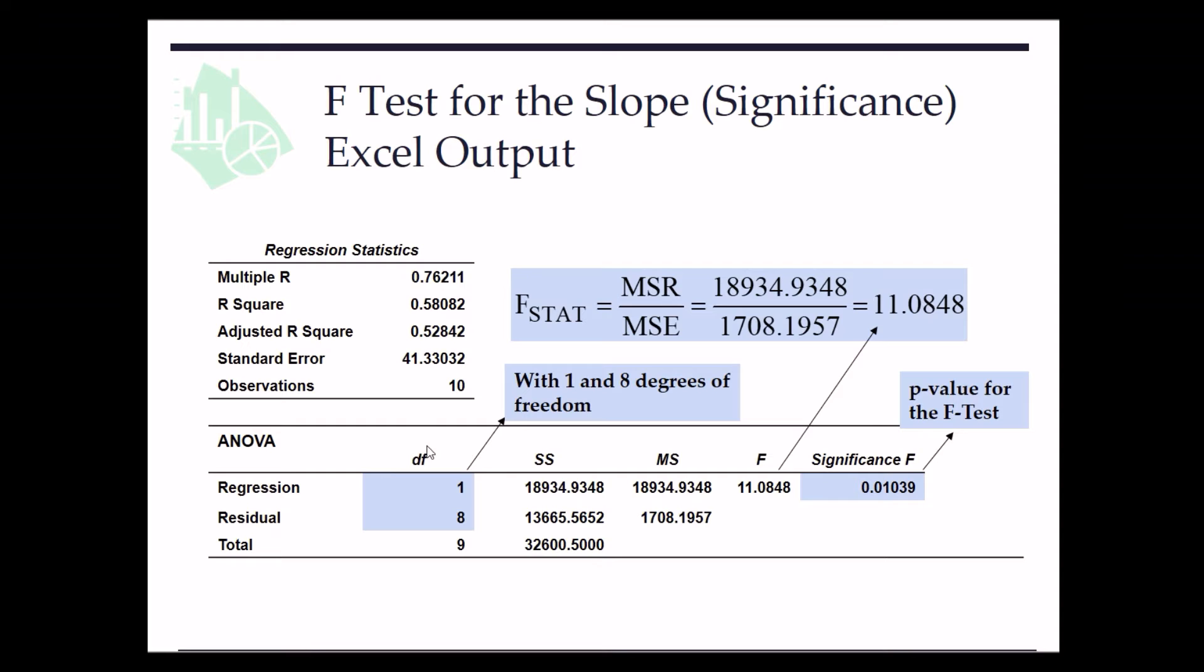Okay, so let's go back. We have the regression with ANOVA. For the F-stat, it follows an F-distribution with numerator df 1,